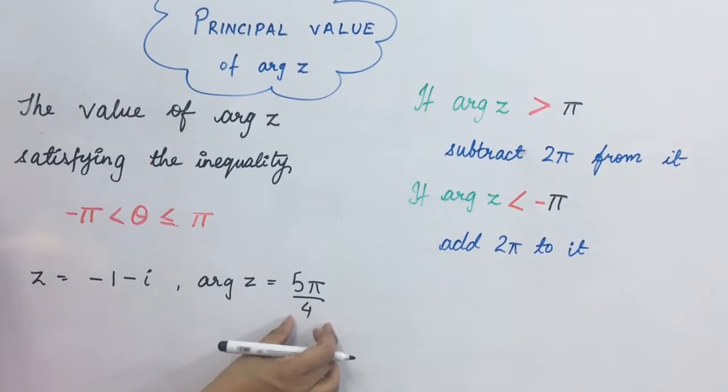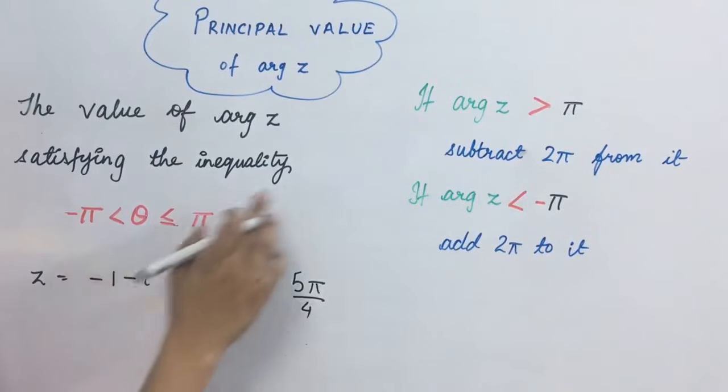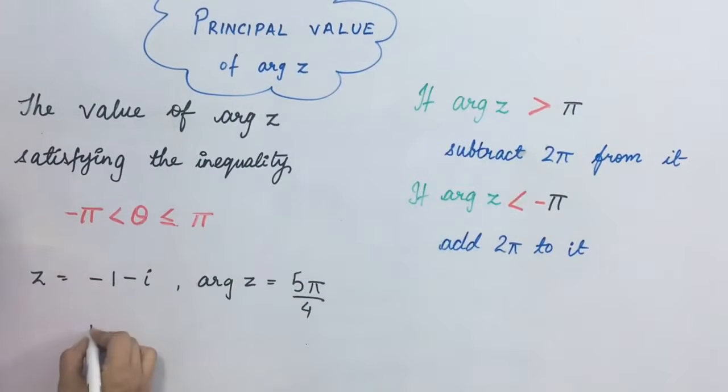This value, what is it? It is greater than pi. It is greater than pi. Principal value of argument z will be 5 pi upon 4 minus 2 pi. That is minus 3 pi upon 4. This will be the principal value of argument z.